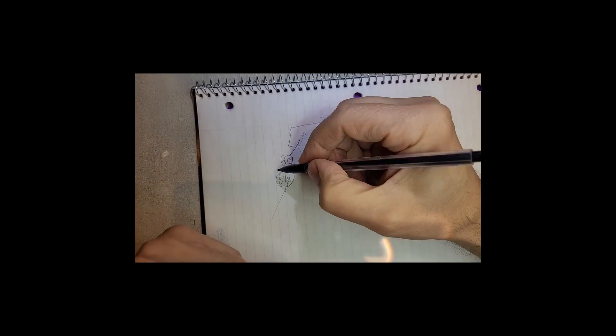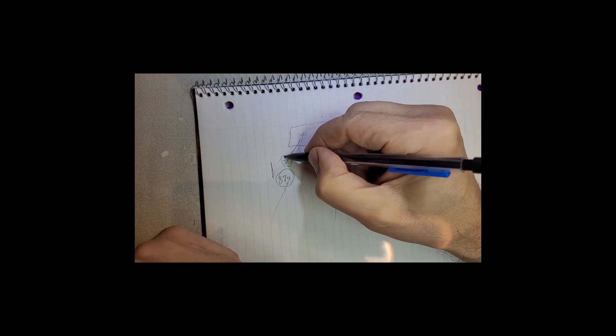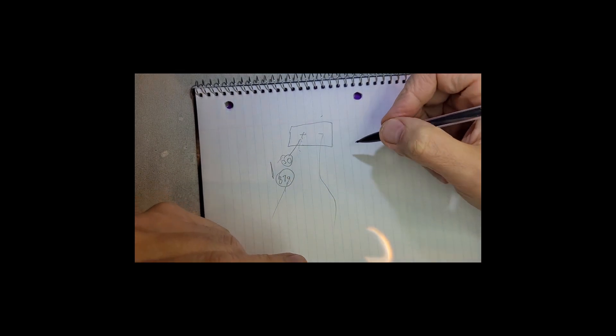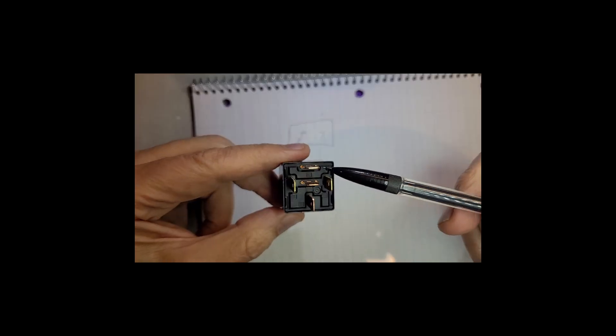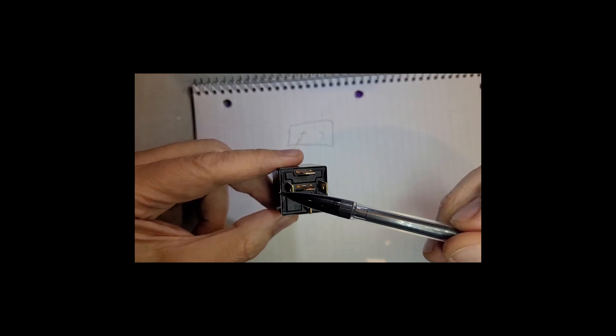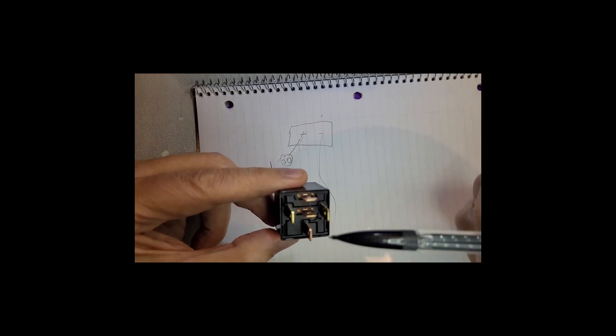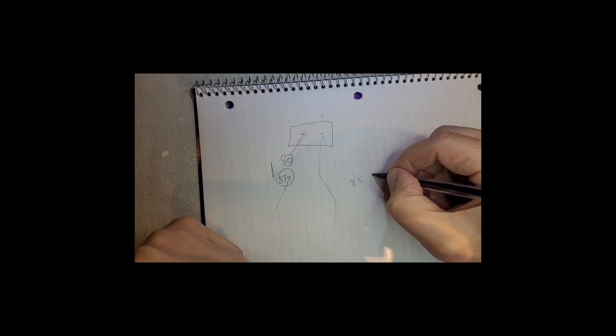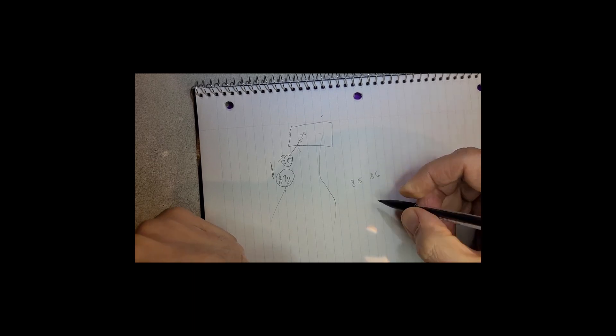So internally inside the relay it's just a switch that closes and opens. We still have to connect the coil which is 85 and 86. On your relay you're going to have 85 and 86, and we're going to run that to the box that I have here.